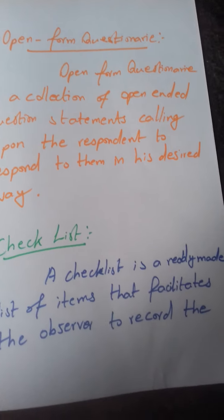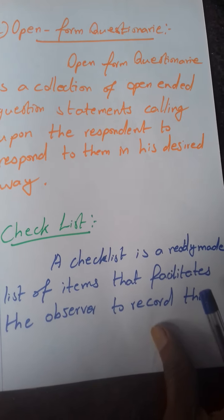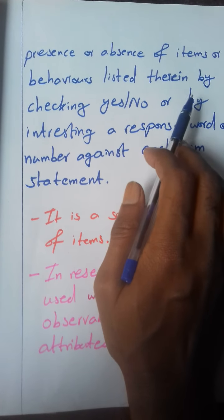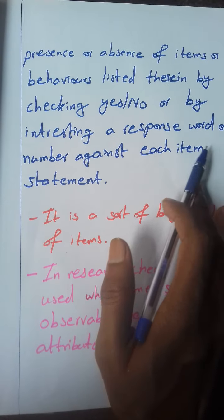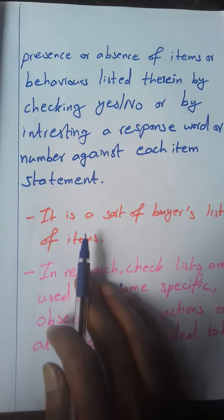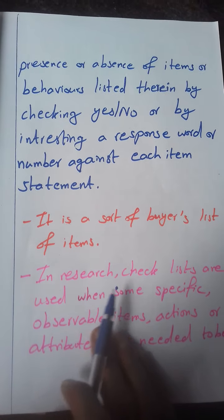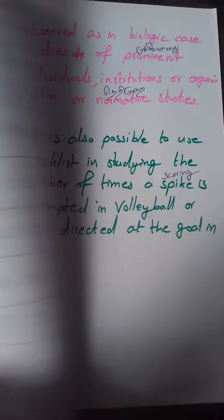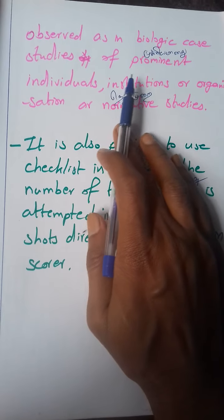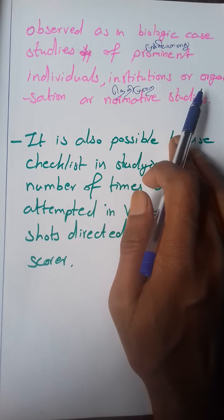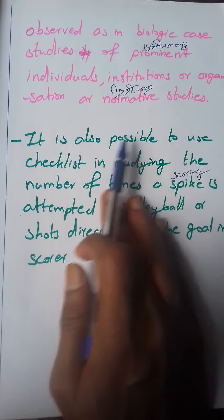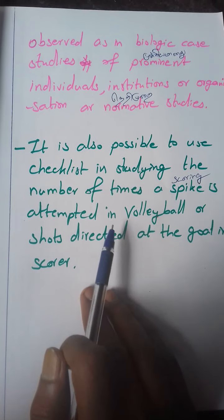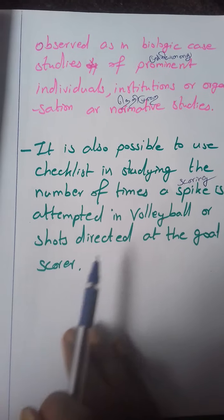In summary, a checklist is a ready-made list of items that facilitates the observer to record the presence or absence of items or behaviors listed therein by checking yes or no, or by entering a response word or number against each item statement. It is used in case studies of prominent individuals, institutions, or organizations, or normative survey studies, and also to study items like spikes attempted in volleyball or shots directed at goal.